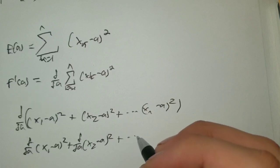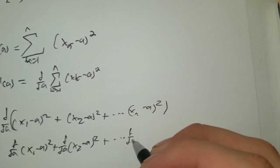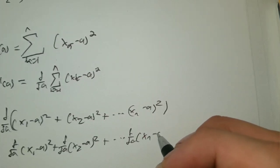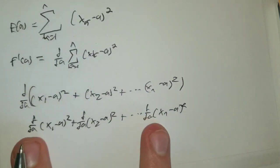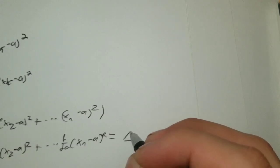derivative with respect to a of xn minus a squared. We can rewrite this as the series of the derivative.